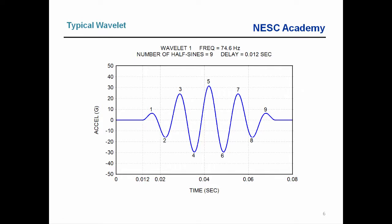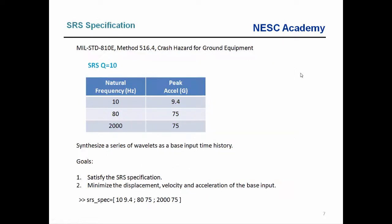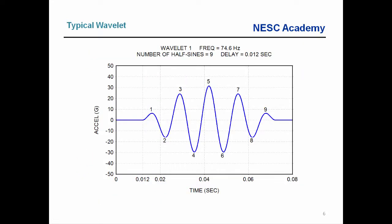The idea is to take a whole series of these wavelets with staggered offsets, where each individual wavelet can have its own amplitude, frequency, number of half sines, and delay. We mix and match these to satisfy our shock response spectrum specification. But there's another consideration: satisfying the SRS is the primary goal, but not the only goal. We want to get the most bang for the buck — using the least amount of energy, meaning the least possible acceleration, least possible velocity, and least possible displacement, all within some reasonable duration. So this is not just a process of synthesis, it's also a process of optimization.